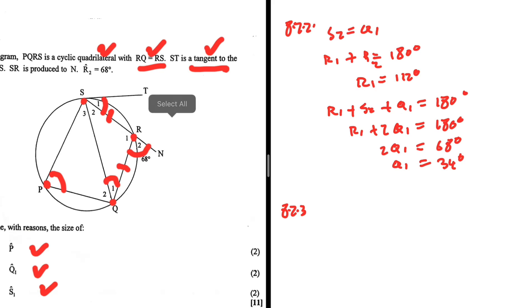If S1 is between the tangent ST and the chord SR, then S1 should equal Q1 because that chord subtends Q1. So S1 equals Q1 for the reason given. So S1 is also 34 degrees.